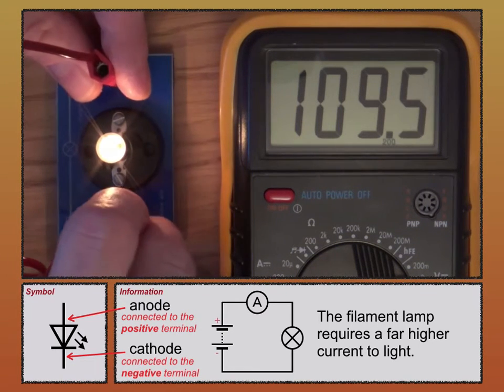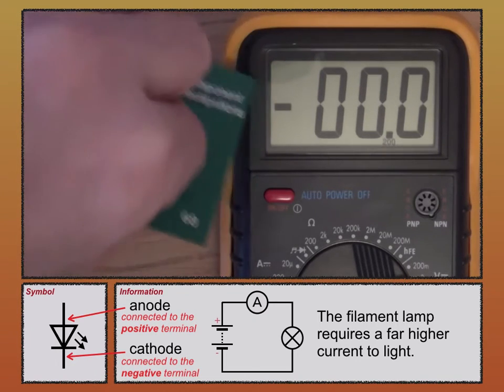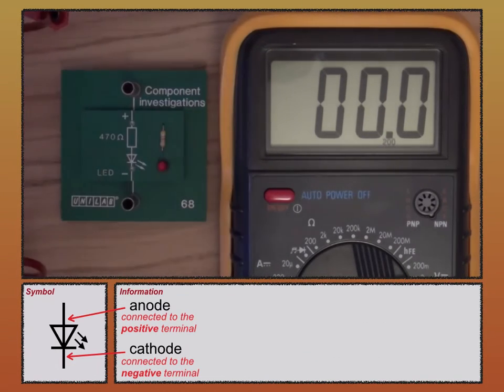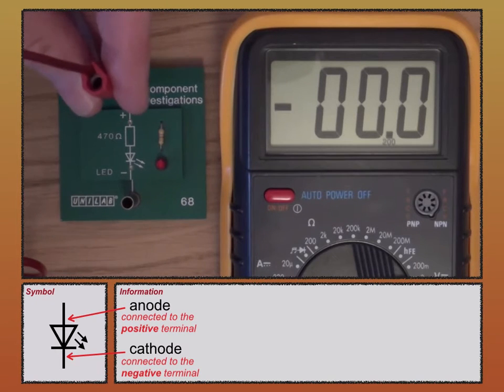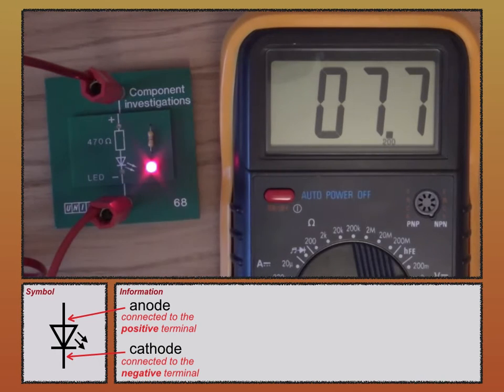So, one advantage of the LED. I'm going to take this filament out and switch to the LED. One advantage of the LED is that more of the electrical energy is converted to light, less to heat. And that's why, as you can see, the current is smaller.